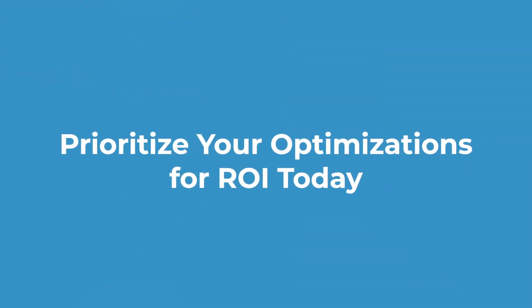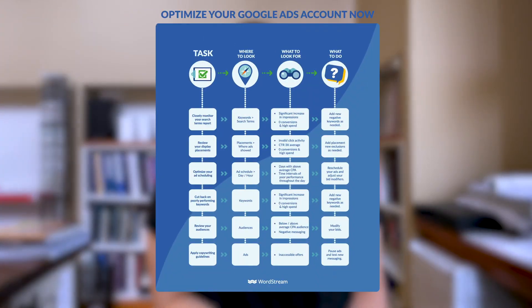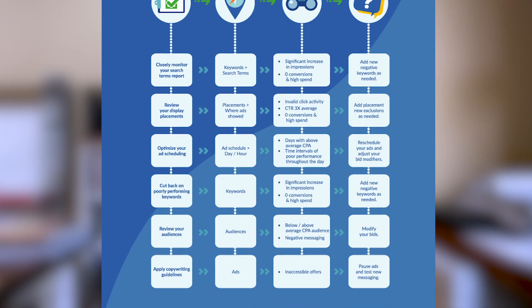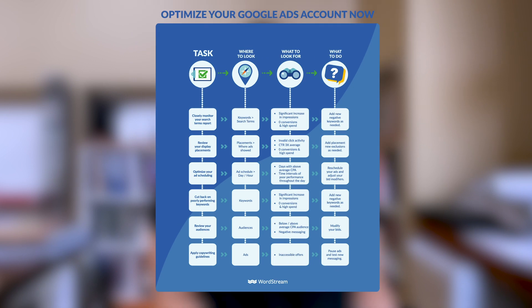Prioritize your optimizations for ROI today. Let's talk about what we can control right now: the stability and cost efficiency of your Google Ads accounts in the current environment. While you're pulling back on spend right now, it's important to identify quick win optimizations so that you can deliver the most value from your current budget. Here's a checklist you can use as a guideline to optimize your results for ROI today. We've provided a link to all of the checklists you'll see in this video in the description below so you can download them and keep them for reference.